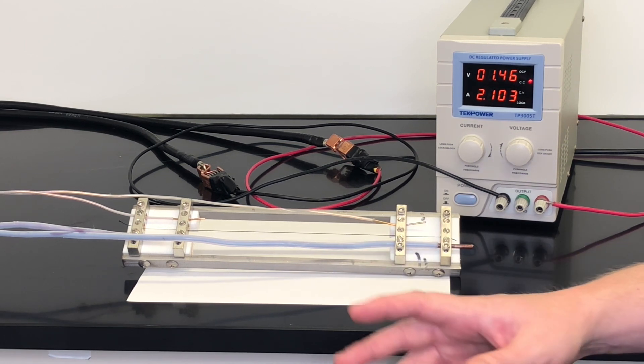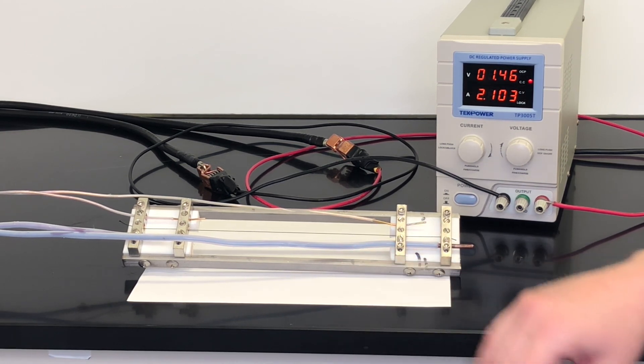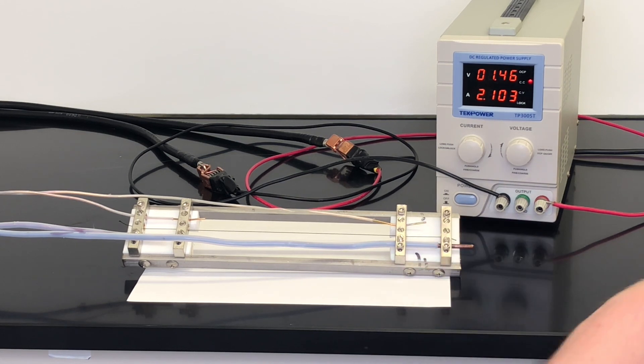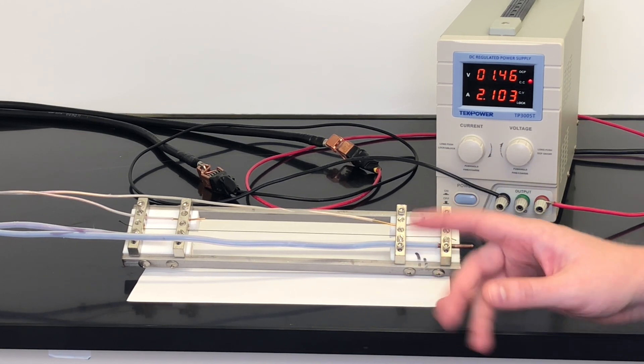We start off with 2.1 amps of current going through the yarn, and as you can see the voltage level is stable. This is a current that the yarn can sustain for a long time without degrading.